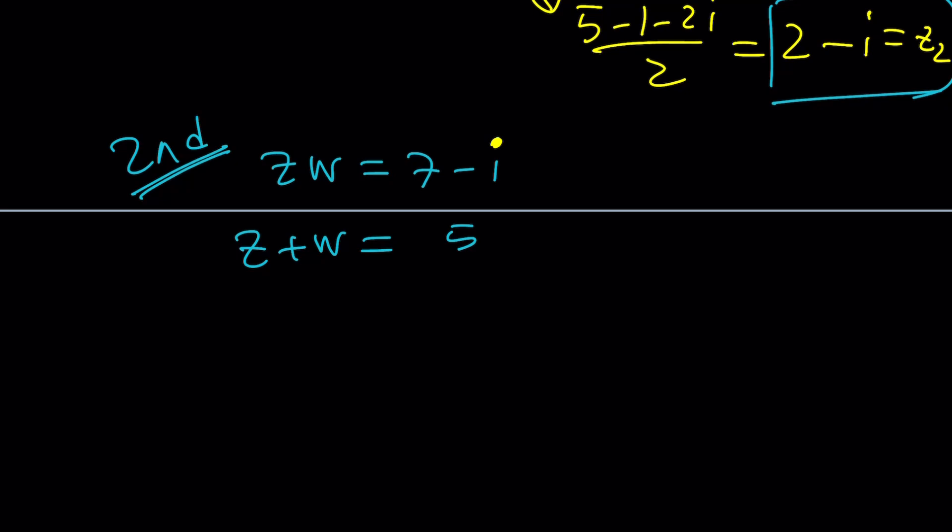Great. So, for the second method, let's go ahead and use something cool. Since the sum of Z and W is a real number, I'm just going to assume that Z can be written as A plus BI, and W can be written as C minus BI. In other words, the imaginary parts need to cancel out.